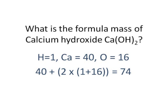Calcium 40, oxygen and hydrogen twice. That's two lots of 1 plus 16. Total mass, total formula of calcium hydroxide is 74.